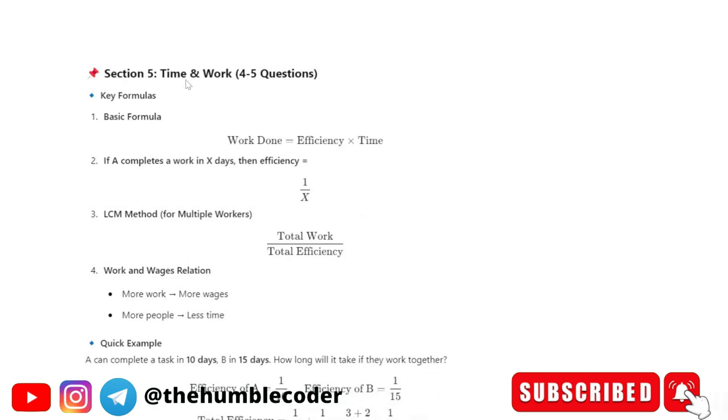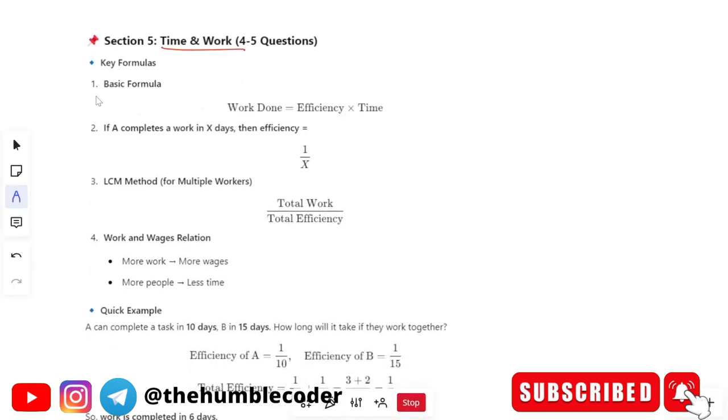Moving on next is time and work which is again important topic when it comes to your exam. So the basic formula for time is work done equals to efficiency into time. So if a completes a work in x days then the efficiency of a will be 1 by x. LCM method is total work divided by total efficiency.